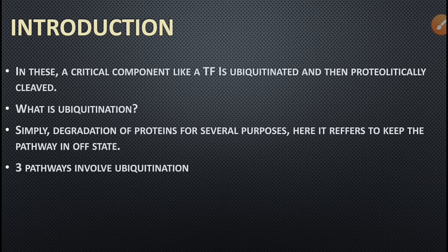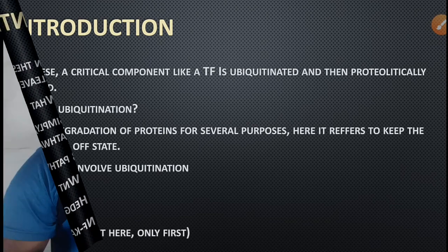Now there are three pathways which involve ubiquitination. The first one we have is the WNT pathway and in this video we are only going to discuss this pathway. The second one we have hedgehog pathway. The third one is the NF-kappa-B.